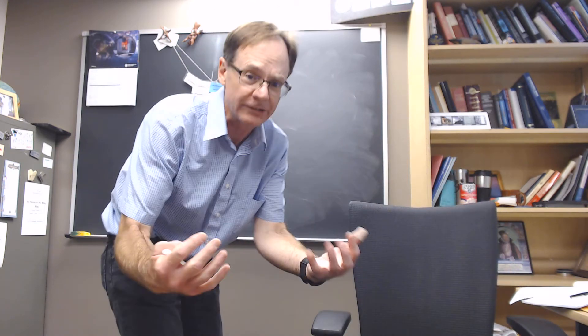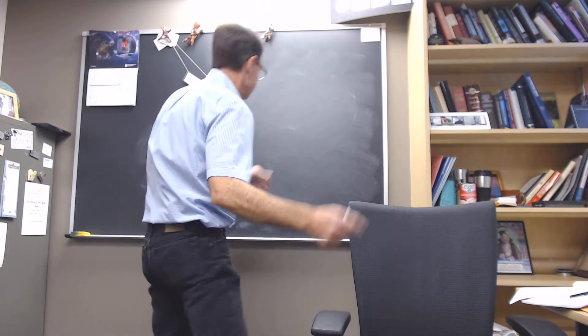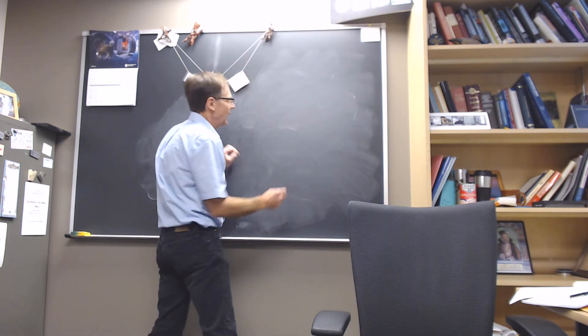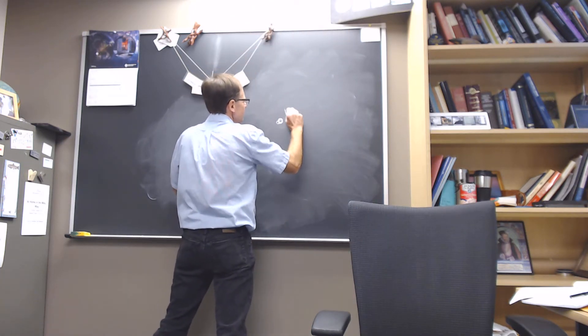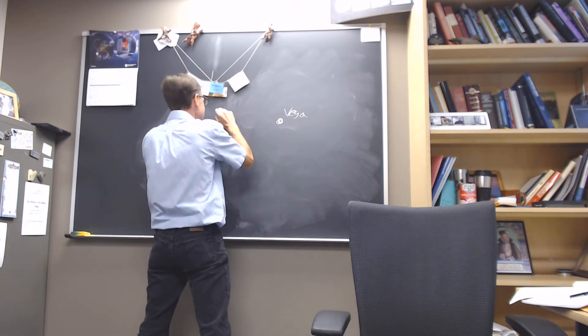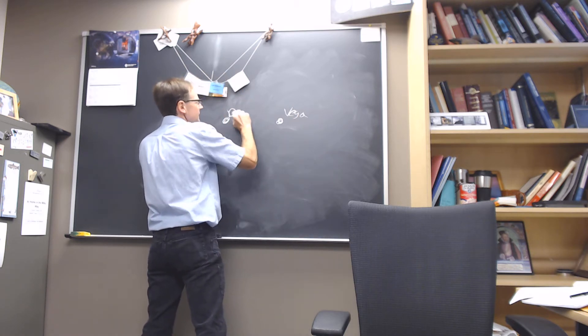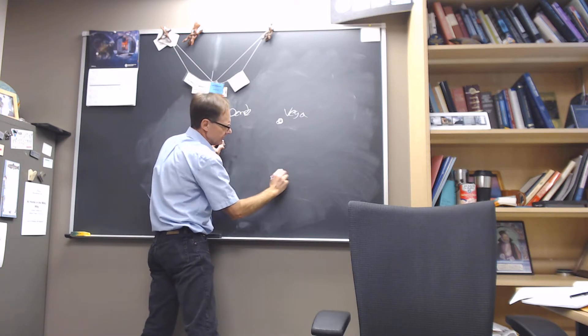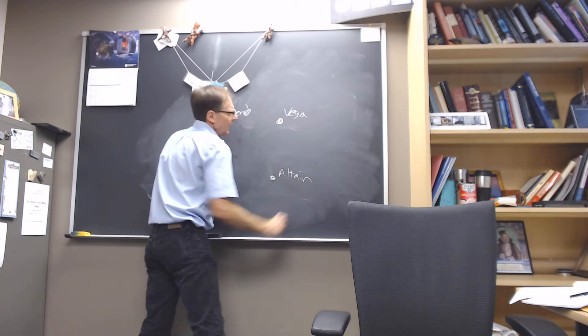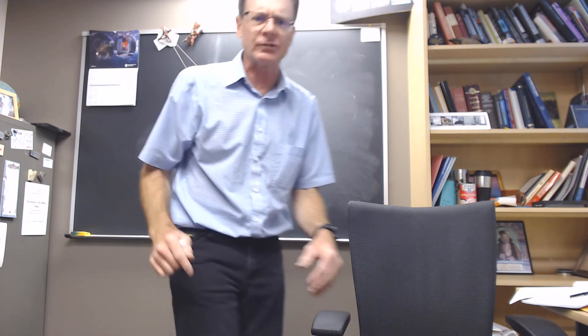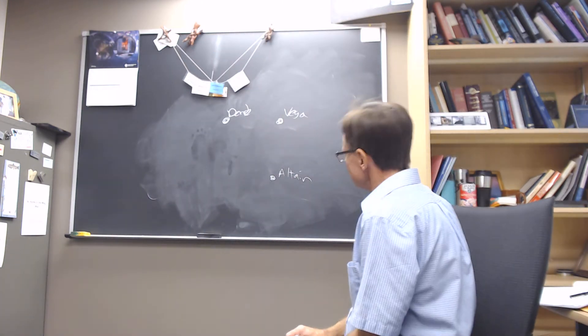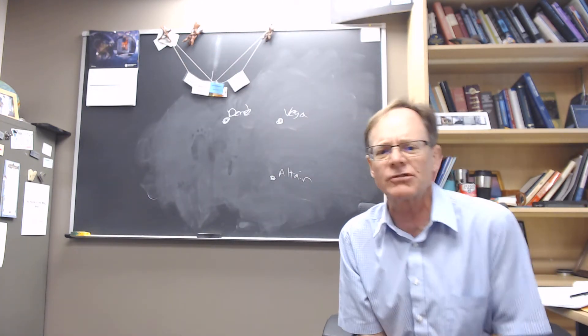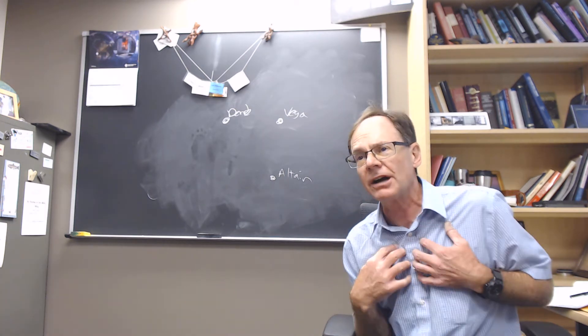The Summer Triangle is three stars. Any three stars will make a triangle unless they form a line, but we'll worry about that right now. Vega is one of these stars. Deneb is another of these stars and Altair is the third of these stars. We'll talk more about the stars themselves next week. But these stars are very bright stars. There are 200 billion stars, roughly speaking, in the Milky Way galaxy, our galaxy where we live.